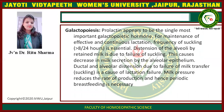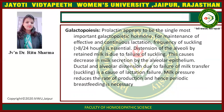And last is Galactopoiesis. Prolactin appears to be the single most important galactopoietic hormone for maintenance of effective and continuous lactation. Frequency of suckling is essential. Distension of the alveoli by retained milk due to failure of suckling causes decreased milk secretion by the alveolar epithelium. Ductal and alveolar distension due to failure of milk transfer causes lactation failure. Milk pressure reduces the rate of production, and hence periodic breastfeeding is necessary.